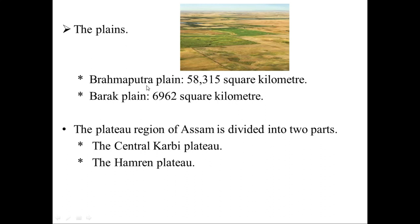We have two plains: the Brahmaputra plains and the Barak plains. The Brahmaputra plain is the largest plain in Northeast India, covering around 58,315 square kilometers, while the Barak plain has an area of around 6,962 square kilometers.